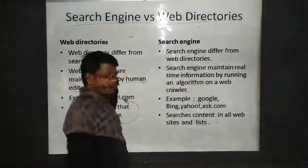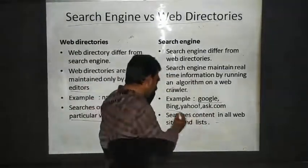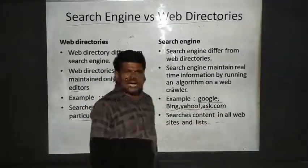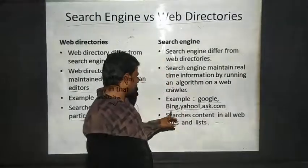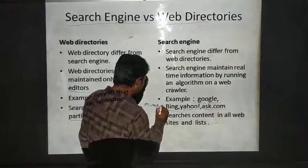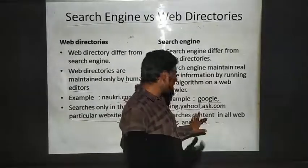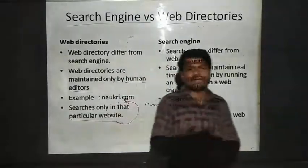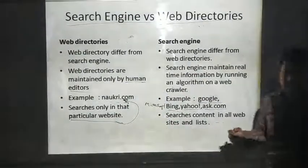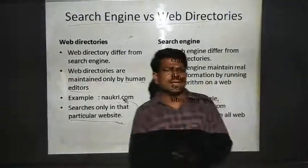Whereas search engines like Google, Bing, Yahoo, and Ask.com search content across all web pages and list related information. Google is mostly used in India. Bing is Microsoft's search engine. Yahoo is Yahoo's search engine. Ask.com is another type of search engine.